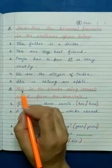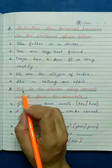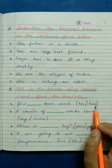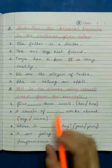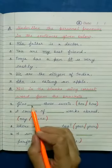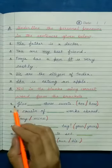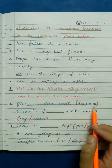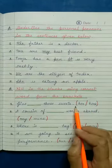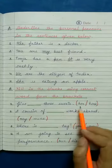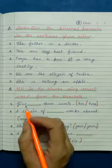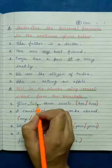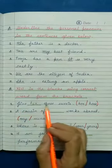Exercise B: Fill in the blanks using correct words from the options given. यहां bracket में कुछ words दिये हैं, उनमें से हमें correct word choose करके blank में लिखना है. First: Give ___ these sweets. Options: her or hers. उसको sweets दे दो, तो उसके लिए her. यहां हम her लिखेंगे — H-E-R. Give her these sweets.